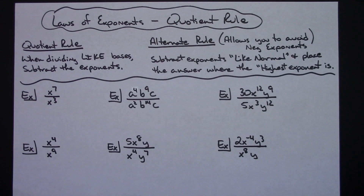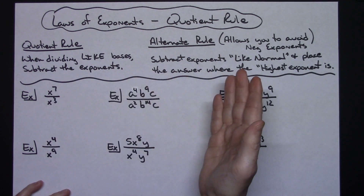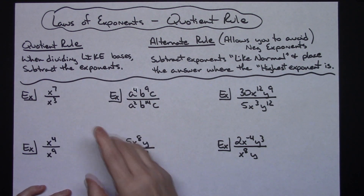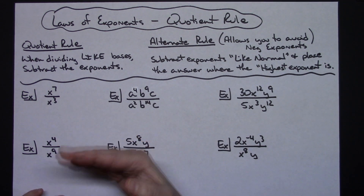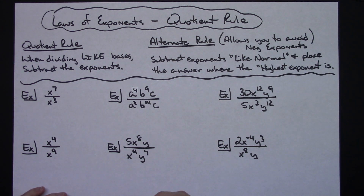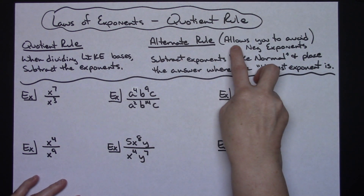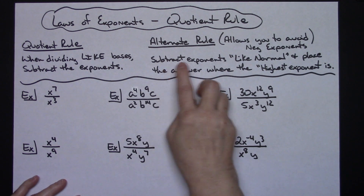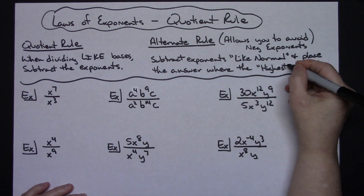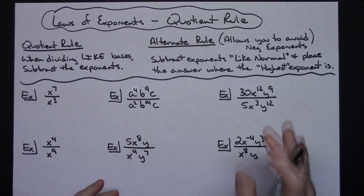In this video I'm going to be taking a look at one of the laws of exponents — the quotient rule. Technically, all textbooks state that when dividing like bases you subtract the exponents, and traditionally you subtract top minus bottom, which can produce negative exponents. There is an alternate rule to avoid negative exponents: subtract the exponents like normal and place the answer where the highest exponent is.